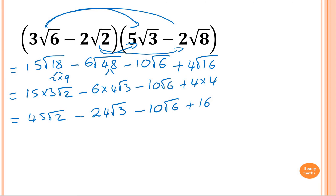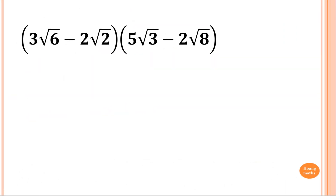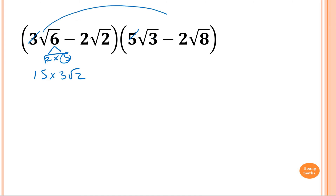Now I want to show you another way — the way I normally do it. Some people find this method quicker and easier because it uses multiplication directly. So: 6 is 2 times 3, square root. Then 3 times 5 is 15. Root 3 times root 3 is 3, so times 3 root 2. And this time together.